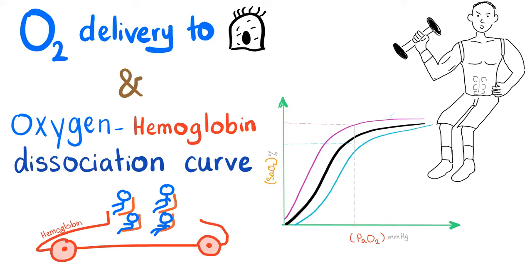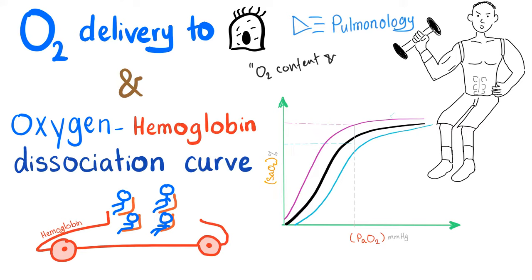Hey guys, it's Medicosis Perfectionelis, your favorite medical channel, and we continue talking about pulmonology. In the previous video, we talked about respiratory acidosis and respiratory alkalosis. Today, we'll talk about oxygen delivery to tissue and the oxygen hemoglobin dissociation curve. This is going to be a very brief discussion, but if you need more information, there is a video on my channel called Oxygen Content and Oxygen Saturation, so please check it out to learn more. Now let's get started.